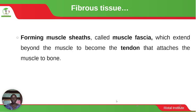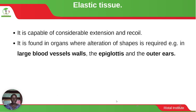Fibrous tissue also forms the muscle sheath called the muscle fascia, which extends between the muscles to become the tendon that attaches the muscle to the bone. The tendon, formed by fibrous tissue, is the one that connects muscles to bone.